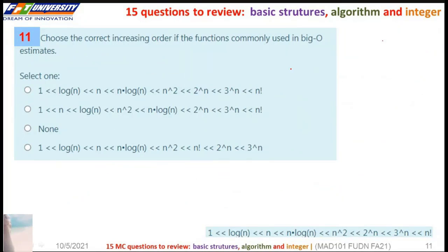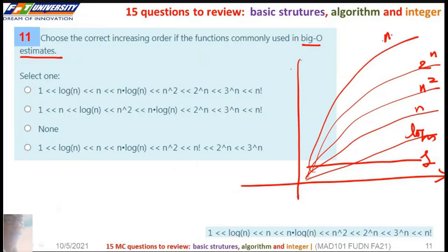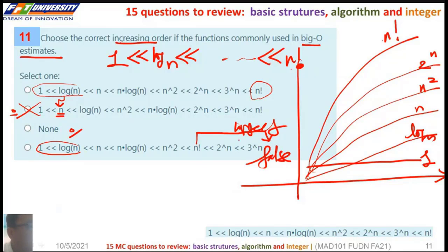The next, choose the correct increasing order if the function commonly used in big-O estimate. We have the function O(1), O(log n), n, n square, 2^n, and factorial in increasing order. You see 4. Maybe here the log. Maybe here n factorial. So the correct answer is A.